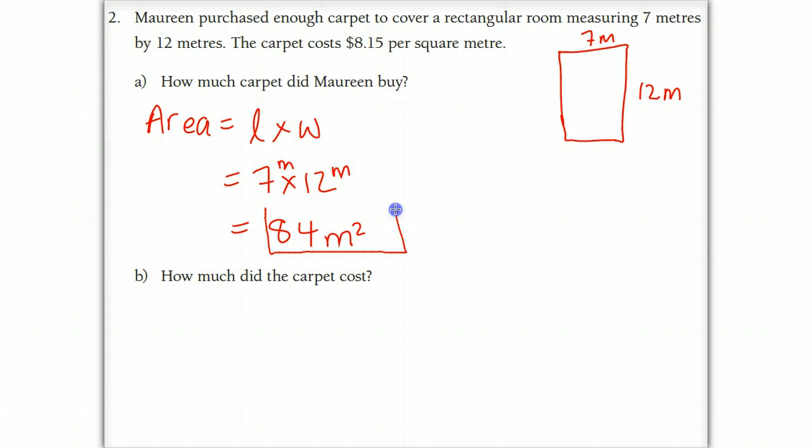So our answer here is 84 meters squared. We can't say it's 84 meters because 84 meters is a linear length like a line that might be 84 meters long, but that's not what we want. The area of this room here is 84 meters squared.